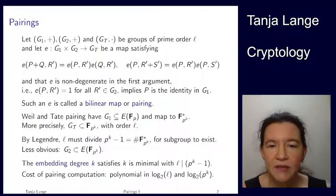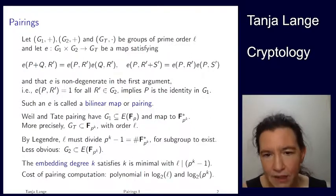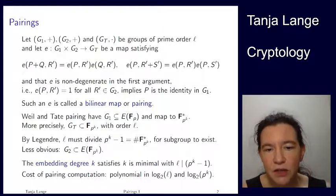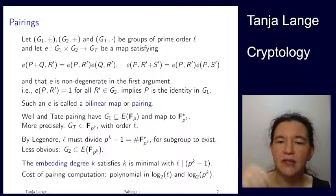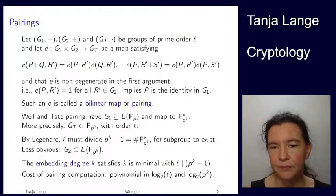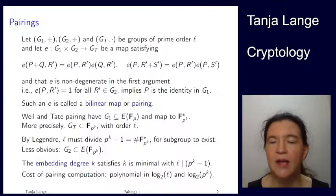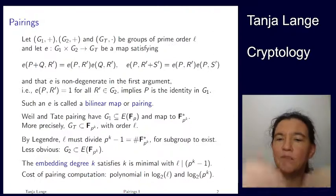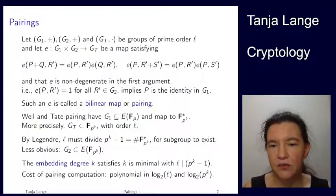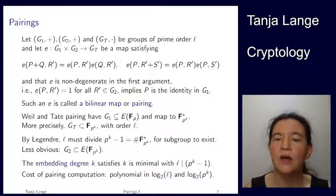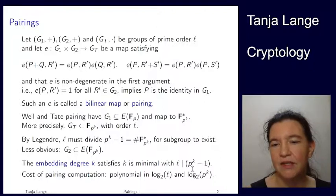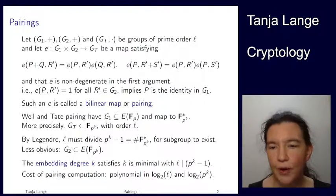So this k that we're seeing here is called the embedding degree. And the definition of the embedding degree is the minimum k so that L divides p to the k minus 1. So if L divides p minus 1, then the embedding degree is 1. We look at what power of k we need so that this works. You can also see this as the order of p modulo L because if L divides this number, that means that p to the k is congruent to 1 mod L.